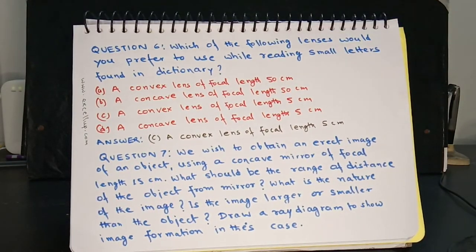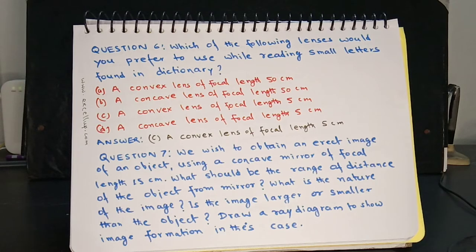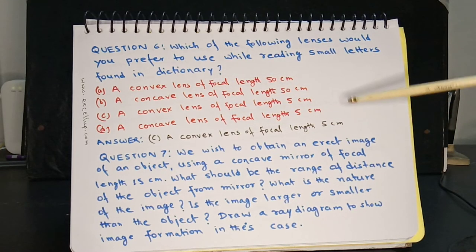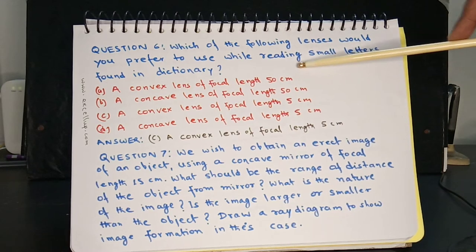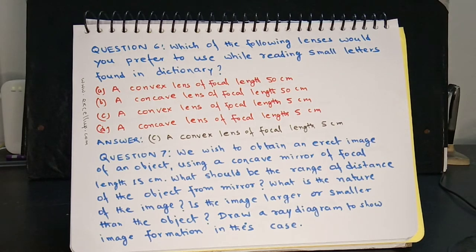Question 6: Which lens would you prefer while reading small letters in a dictionary? Options: a) convex lens of focal length 50 cm, b) convex lens of focal length 50 cm, c) convex lens of focal length 5 cm, d) concave lens of focal length 5 cm. The answer is c) convex lens of focal length 5 cm. We always use a convex lens as a magnifying glass, and a smaller focal length allows the lens to be used at a more comfortable distance.